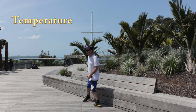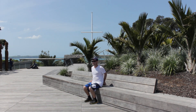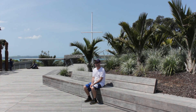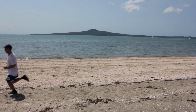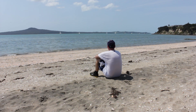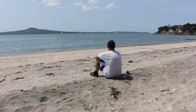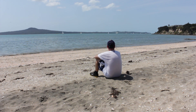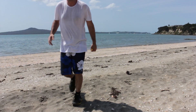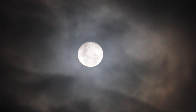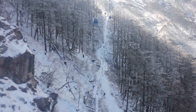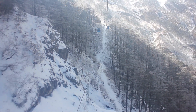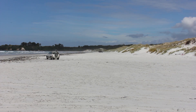Temperature refers to the heat in the atmosphere. Temperatures vary both spatially and at different times. Temperatures are generally warmer closer to the equator and at low altitudes, and are directly affected by sunlight hours. From day to day, temperatures are generally highest a few hours after midday, because the earth absorbs sunlight and re-radiates it into the atmosphere, warming it up. The coldest part of the day is just before sunrise. In temperate climates, temperatures are generally coldest in winter when sunlight hours are shorter, and warmest in summer when sunlight hours are longer.